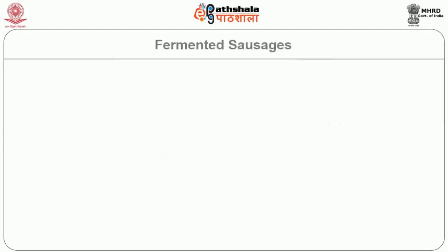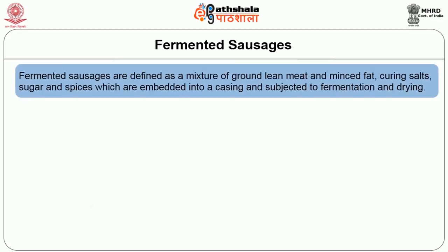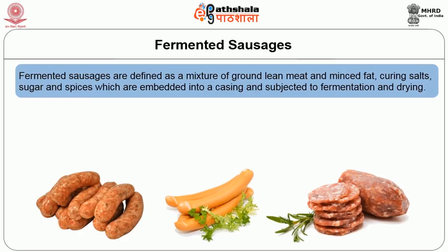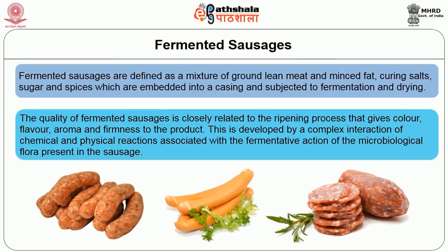Semi-dry sausages have a 15 to 20% loss of moisture during processing, have a softer texture and different flavour profile than dry sausages. However, because of the higher moisture content, semi-dry sausages are more susceptible to spoilage and are usually fermented to a lower pH to produce a tangy flavour. Fermented sausages are defined as a mixture of ground lean meat and minced fat, curing salts, sugar and spices embedded into a casing and subject to fermentation and drying. Quality of fermented sausages is closely related to the ripening process that gives colour, flavour, aroma and firmness to the product.